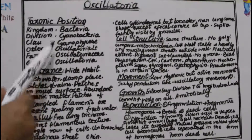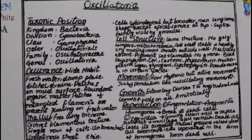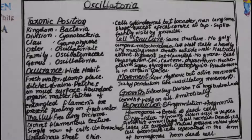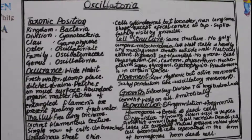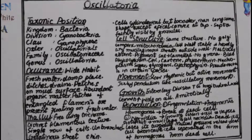Next is the occurrence of Oscillatoria — where and how they occur. They have a wide range of habitats including freshwater streams, damp places, moist places, ditches, and drains. Wherever there is moisture or water, there will be growth of Oscillatoria.